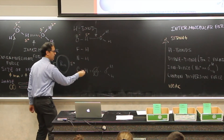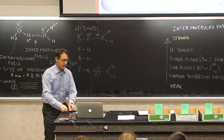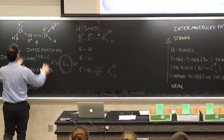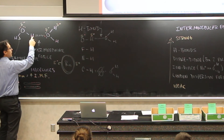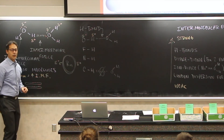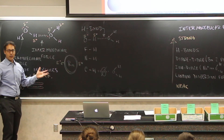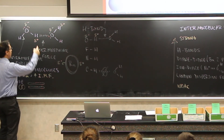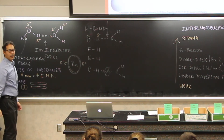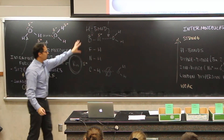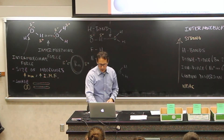Just because something has hydrogen does not mean it will make a hydrogen bond. Here are two water molecules — notice the attraction between this hydrogen and that oxygen. Is this a hydrogen bond? Yes. Water makes hydrogen bonds because this hydrogen is attached to an oxygen atom, which is one of these very electronegative elements.